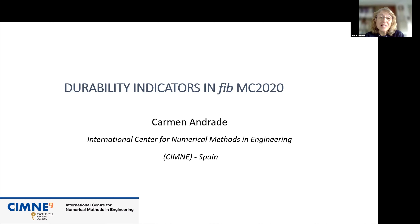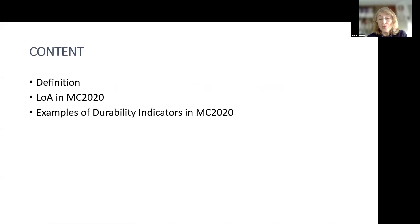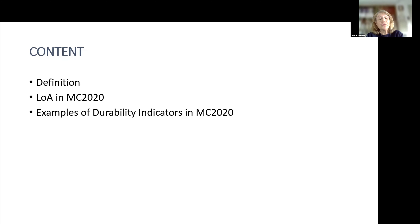I was thinking to present what is now in the Model Code 2020 draft. Steiner has addressed and advanced some of what is there, and my presentation will also be short. It will be about the definition, about what is now included in the levels of approximation for the different levels for assessing or designing the service life, and examples of durability indicators as they appear in the present draft of the model code.